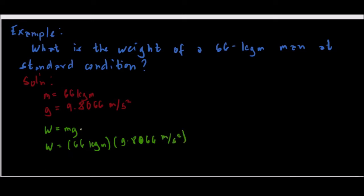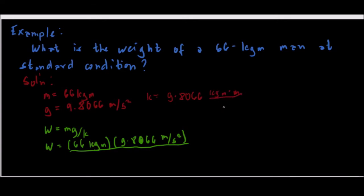Because we want our units to be in the kilogram-force system, we include our constant k. Our k is equal to 9.8066 kilogram-mass·meter over kilogram-force·second squared.